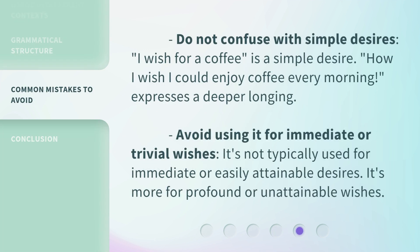Do not confuse it with simple desires. 'I wish for a coffee' is a simple desire, whereas 'How I wish I could enjoy coffee every morning' expresses a deeper longing. Avoid using it for immediate or trivial wishes — it's not typically used for easily attainable desires. It's more for profound or unattainable wishes.